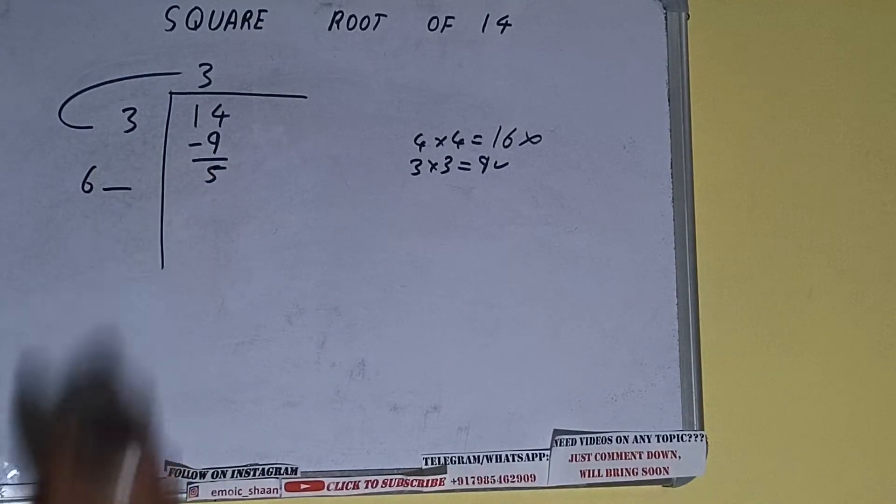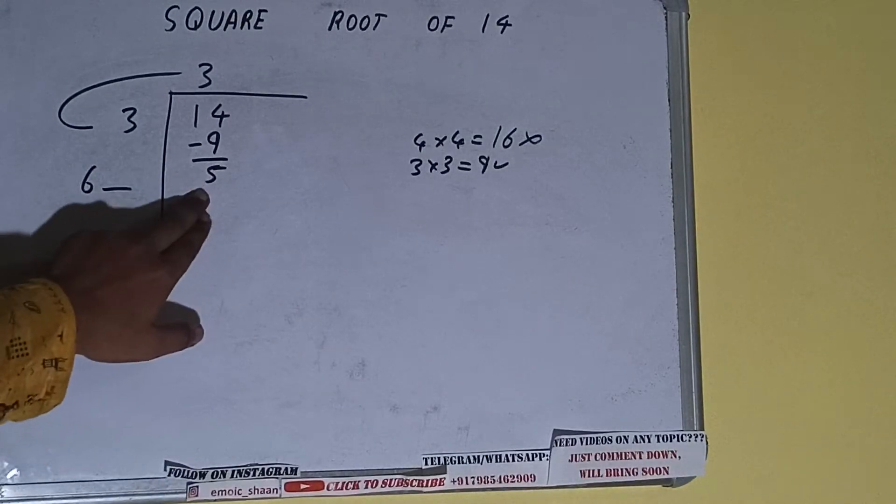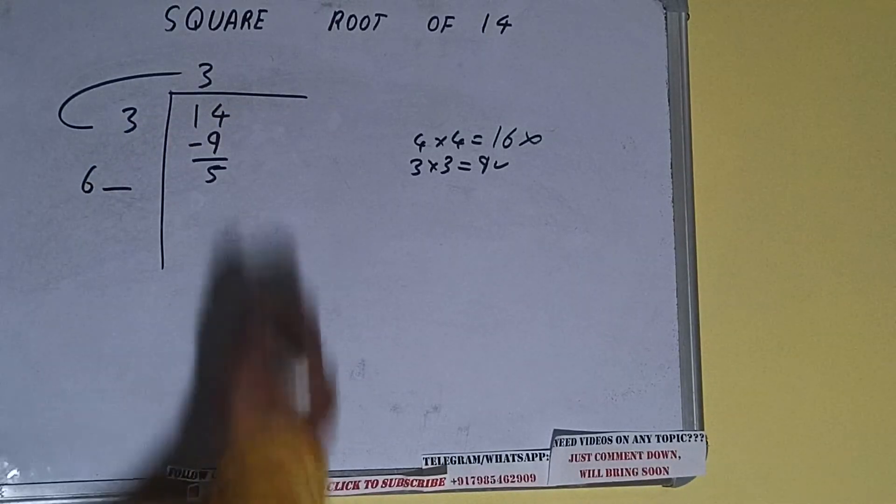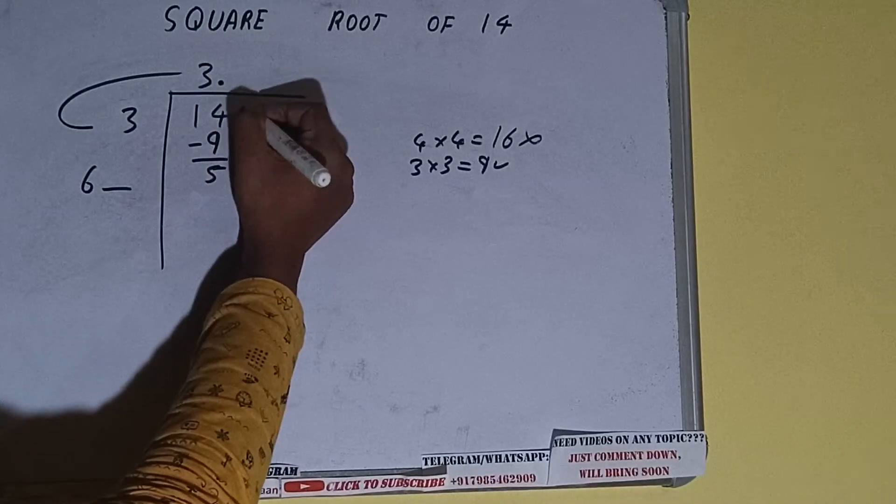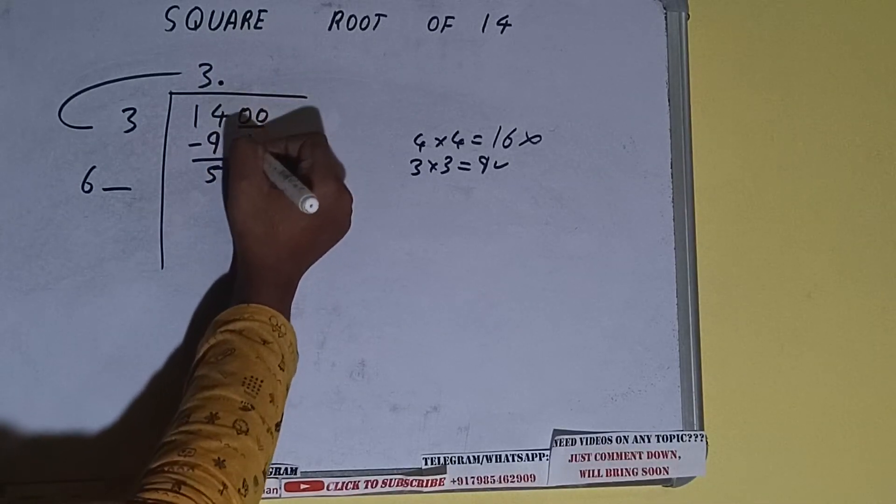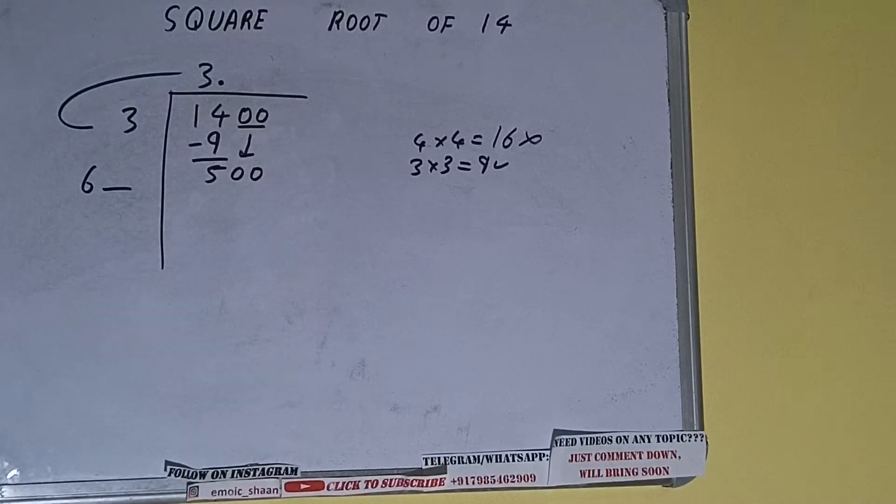Write it here and keep a digit extra, and this number we need to make it big, but we don't have more pairs. So we'll put a decimal. Once we put the decimal, we can bring a pair of zeros down, and the number will become 500.